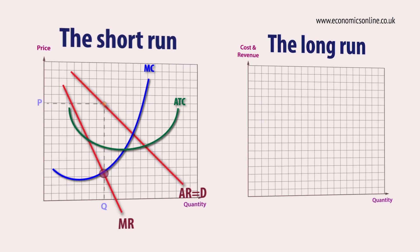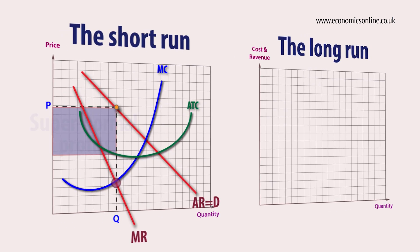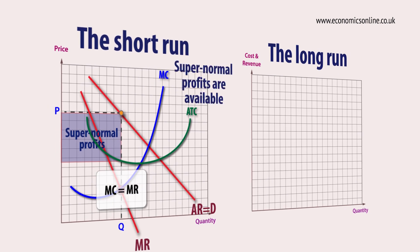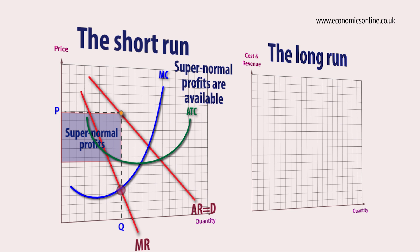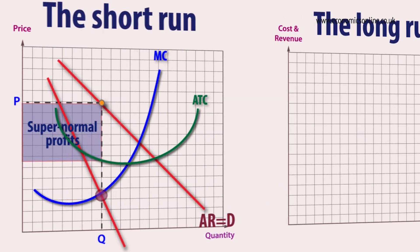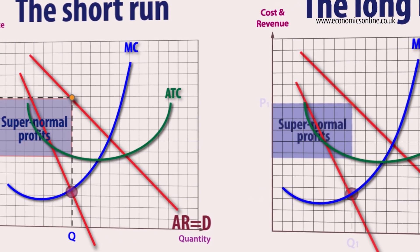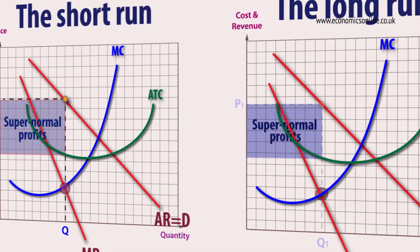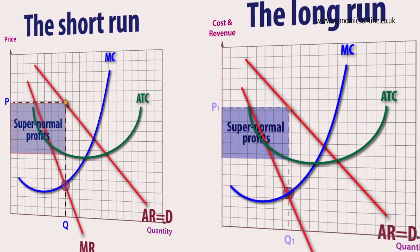Supernormal profits are available in the short run. In the long run, new firms enter the market selling cheaper, better or newer products.